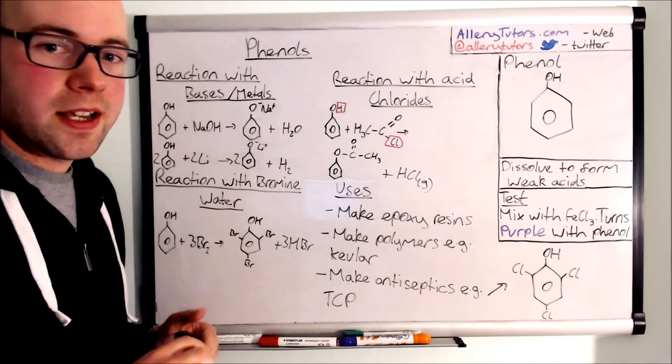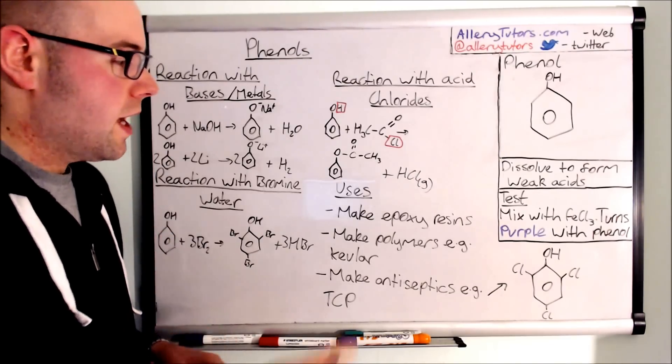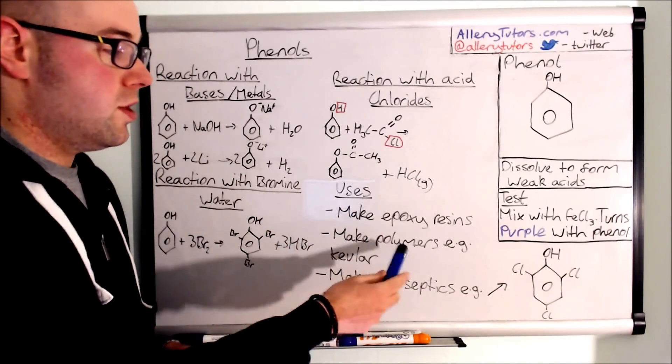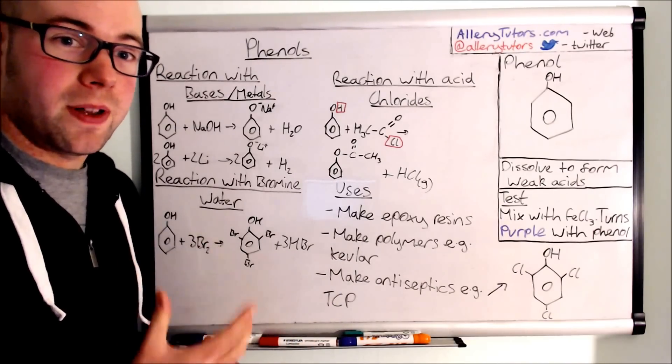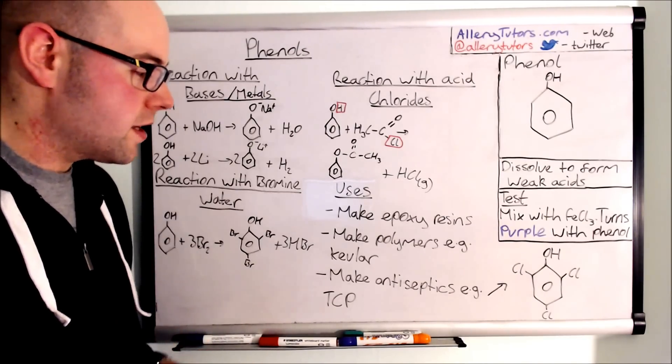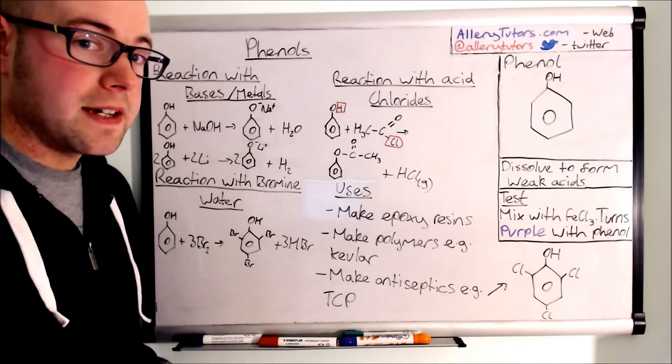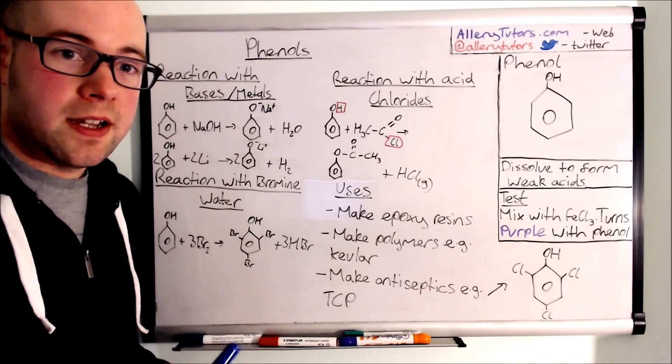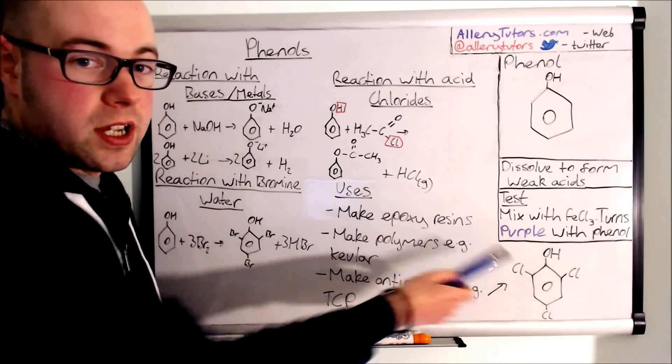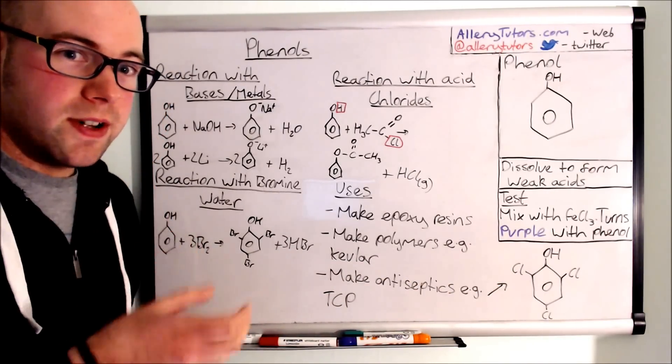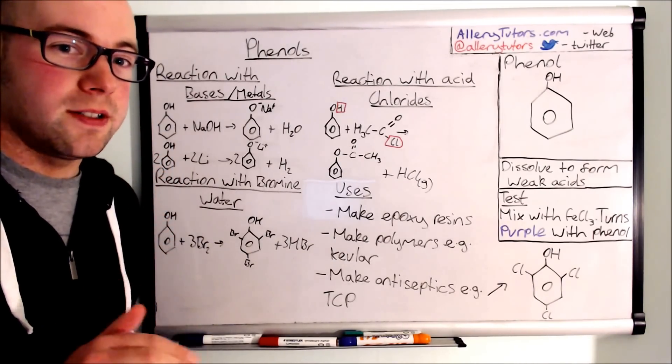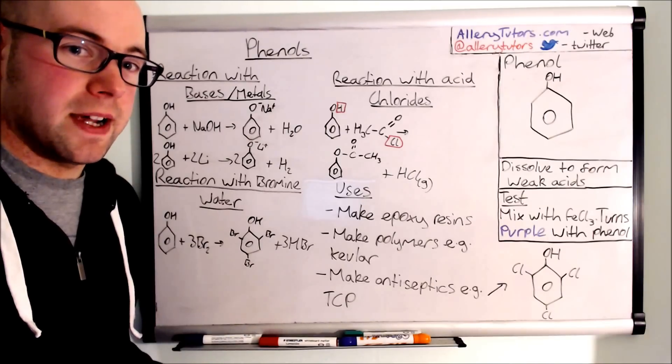Finally, looking at the uses of these. They're very good for making epoxy resins, which is used in glues. It's also used to make polymers, for example Kevlar, which is used in bulletproof vests, really densely packed together. It's also used to make antiseptics, in particular TCP. TCP is trichlorophenol and you can see here I've drawn the actual structure. This is really good if you've got a sore throat. You swig it down, you gargle it—obviously you don't drink it but you gargle it in the back of your throat. It kills off bacteria and then you spit it back out as well.